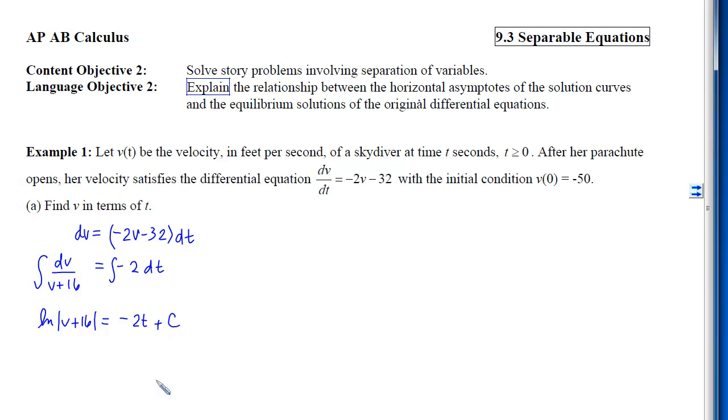I'm at the crossroads. I can either plug in my initial condition now and then isolate v, or I can isolate v first and then plug in the point. Because my antiderivative involves a log, I'm going to choose to isolate v first. The first thing I will do is make both sides into exponents of e. Then I move the absolute value by putting a plus or minus on the other side. Lastly, I would subtract 16 from both sides.